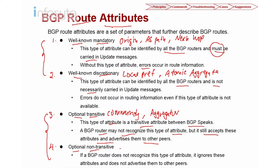The optional non-transitive attribute means the router does not support it and may not advertise it. Examples include MED — multi-exit discriminator — and cluster list, both of which are optional non-transitive attributes.